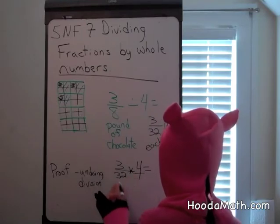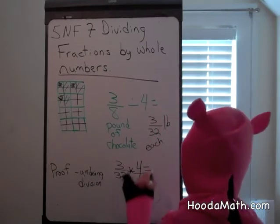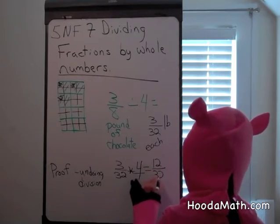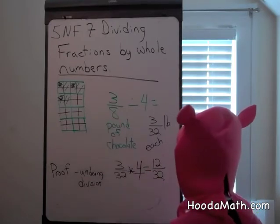We could put four over one. Four times three is what? Twelve over thirty-two. But I thought we had three eighths.